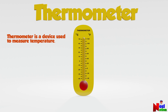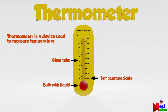A thermometer is a device used to measure temperature. This is a picture of a commonly used thermometer. The parts of a thermometer are a glass tube, a bulb with a liquid, and there are some markings with numbers on both sides which is called a temperature scale.